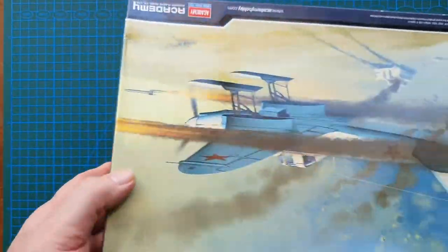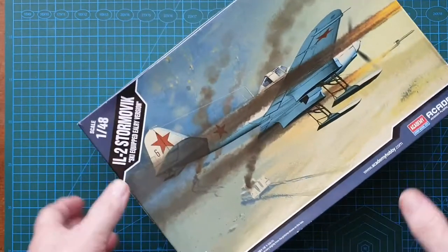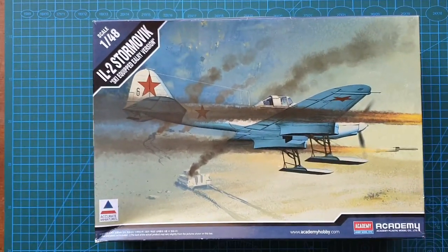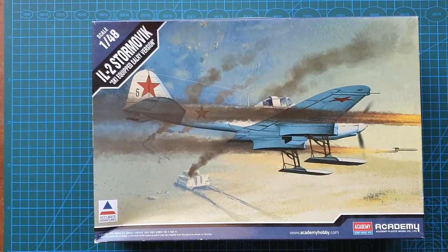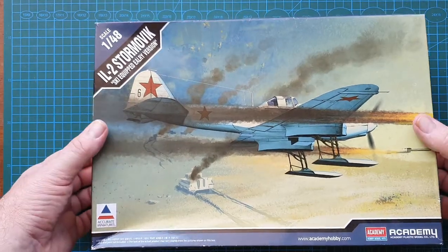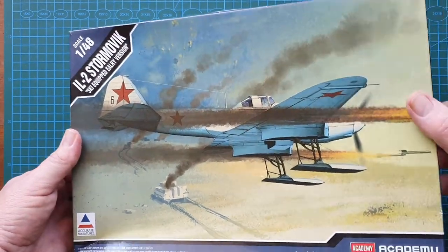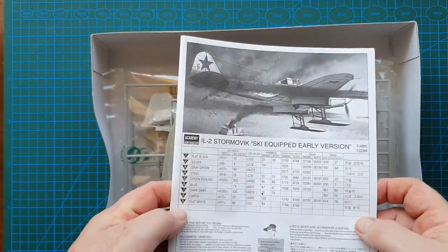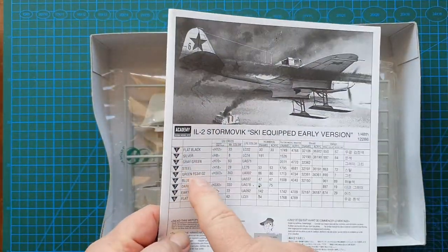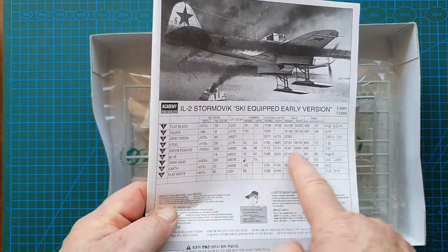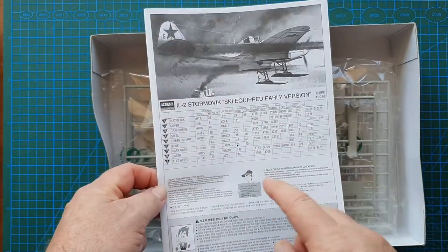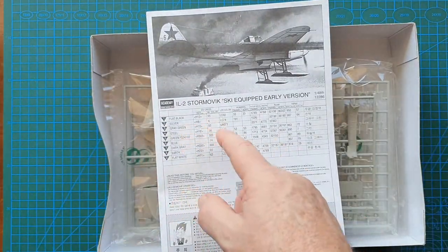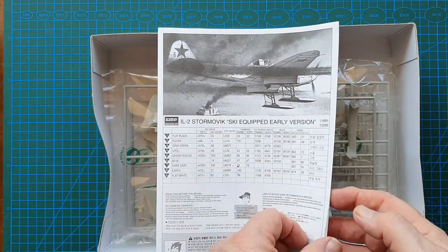Let's have a look and see what's in the box. Instructions—paints on the front, brilliant, love it. So easy to go tick, tick, tick—I've got that, I haven't got that.